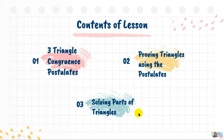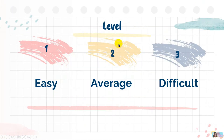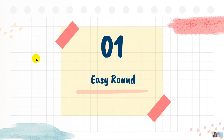Since we already know that if we have two congruent triangles, the corresponding parts will also be congruent. So now we can solve for the missing parts of two congruent triangles. In this lesson, we have three levels: Easy Round, Average Round, and a Difficult Round. Are you ready for the Easy Round?